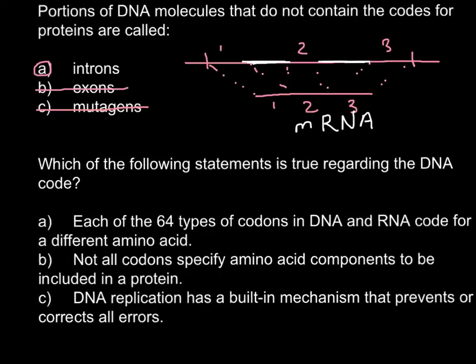So here is the second question. Which of the following statements is true regarding DNA code? Answer A: Each of the 64 types of codons in DNA and RNA code for a different amino acid. And this is not true. Because we do have 64 types of codons, but we only have 20 different types of amino acids. So this is an incorrect answer.